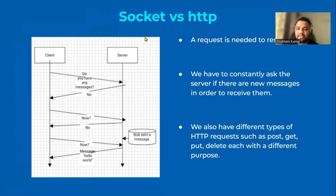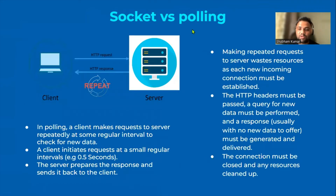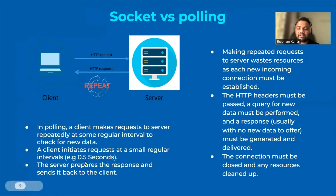Now, socket versus polling. Let's consider the example of notifications. To update notifications, let's say we fire an API every 0.5 seconds. If the backend server takes 10 to 15 seconds to update the data, there is no meaning in firing the API every 0.5 seconds because most of the time we will get the same data — that's a major drawback of polling. As you can see in the image, the client keeps sending HTTP requests and receiving responses repeatedly. This is how polling works.